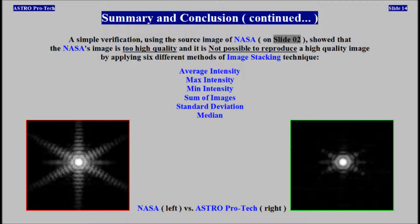A simple verification using the source image of NASA on slide 2 showed that NASA's image is too high quality and it is not possible to reproduce a high quality image by applying 6 different methods of image stacking technique: average intensity, max intensity, minimum intensity, sum of images, standard deviation, and median.